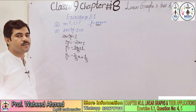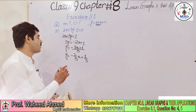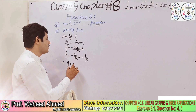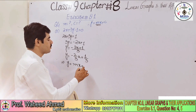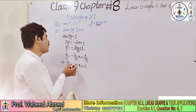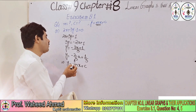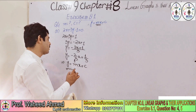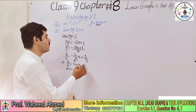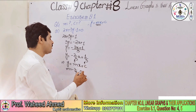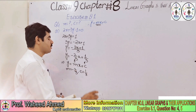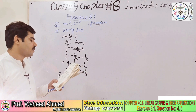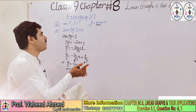Now we compare with y = mx + c. Comparing, m is equal to -2/3 and c is equal to 1/3. These are the m and c values for part A. Next is part B.